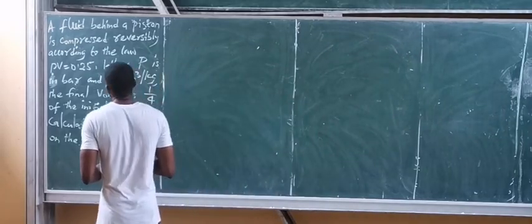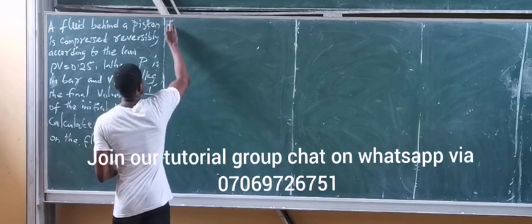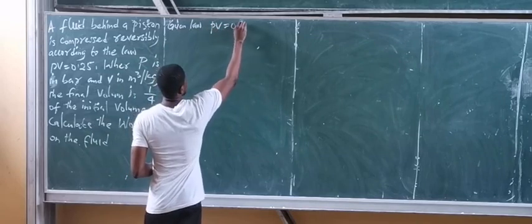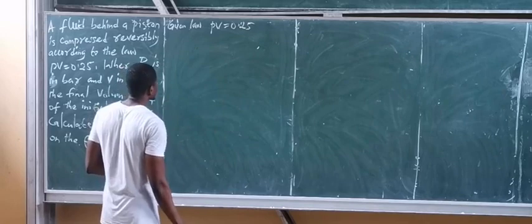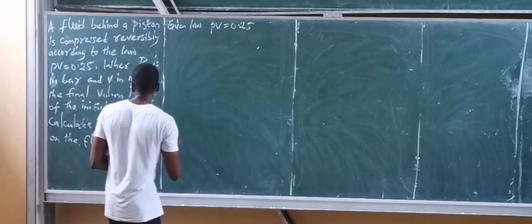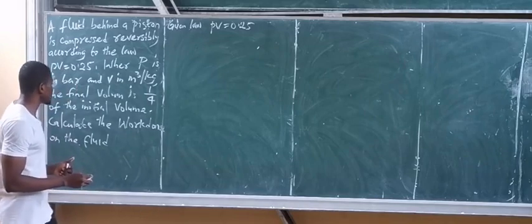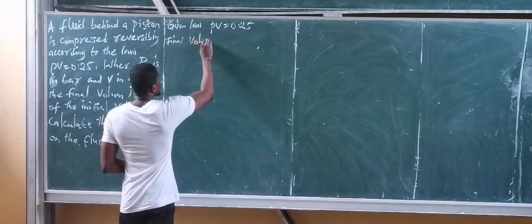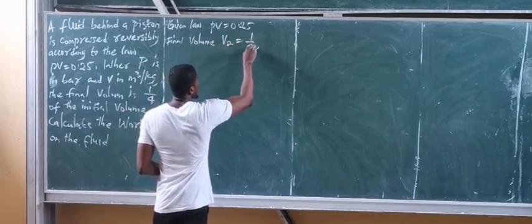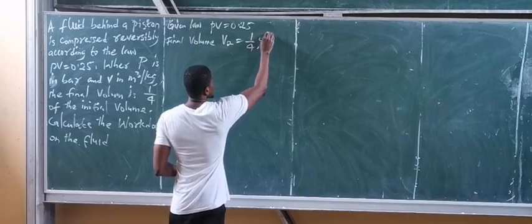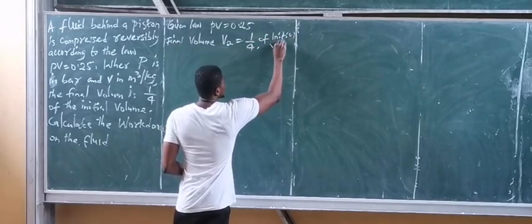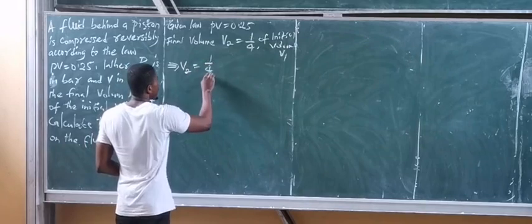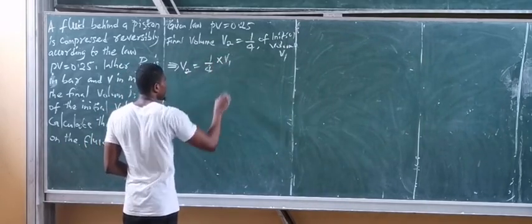Let's look at the parameters we have. We have the law PV equals 0.25. We also have that the final volume V2 is one-fourth of the initial volume, so V2 equals 1/4 times V1.